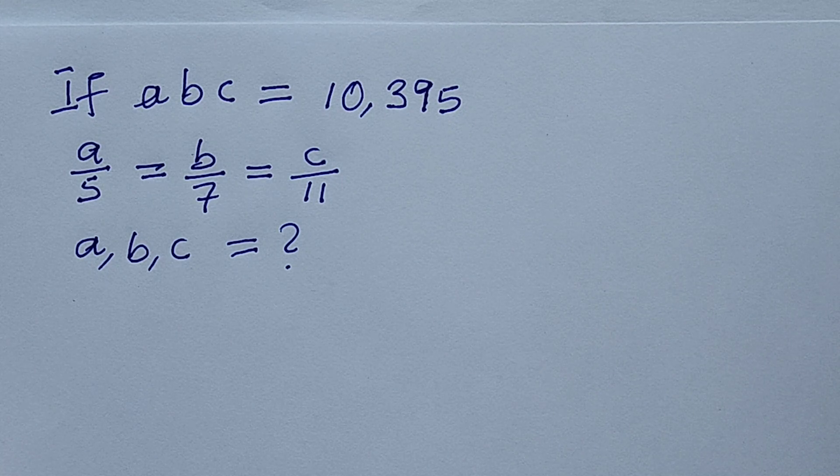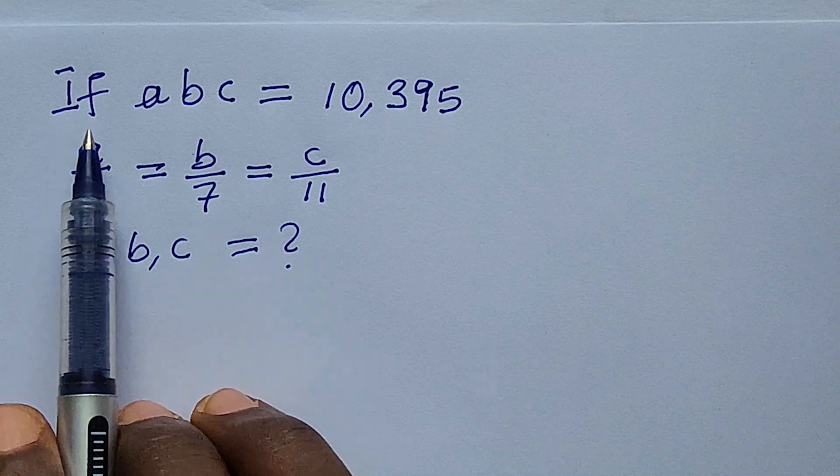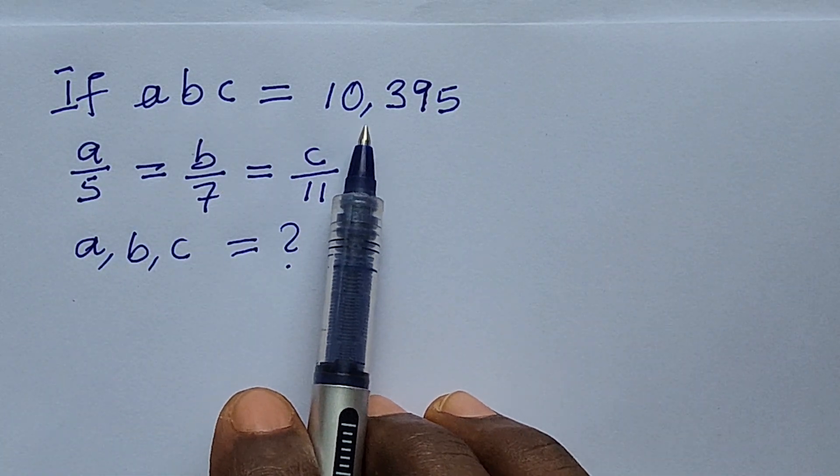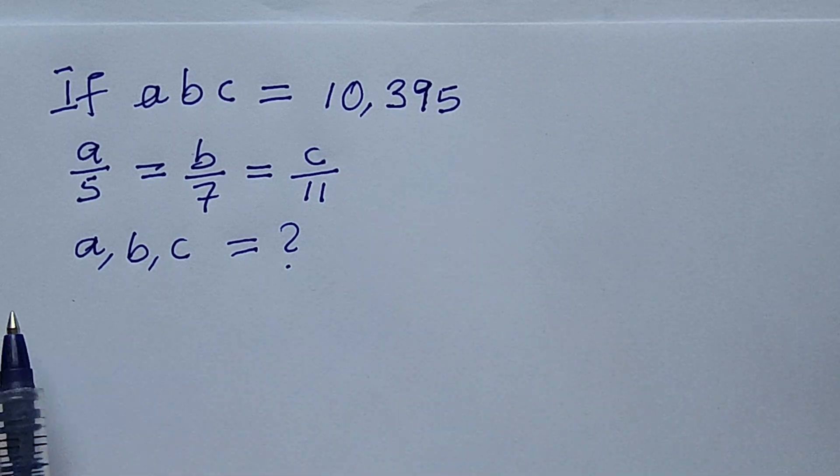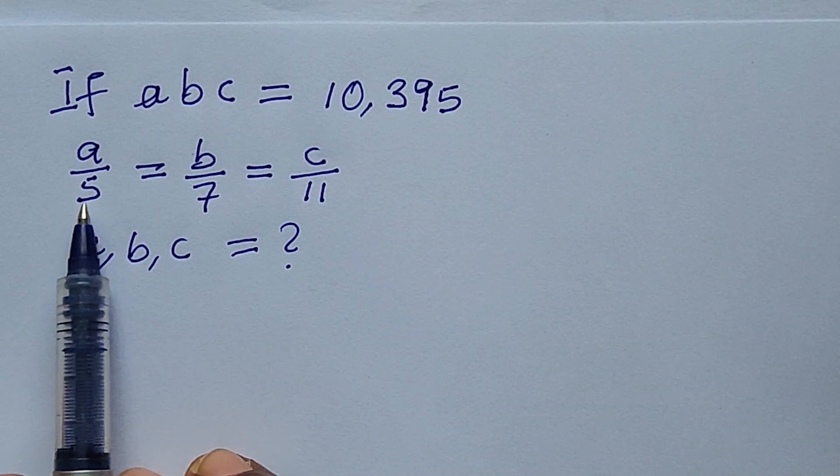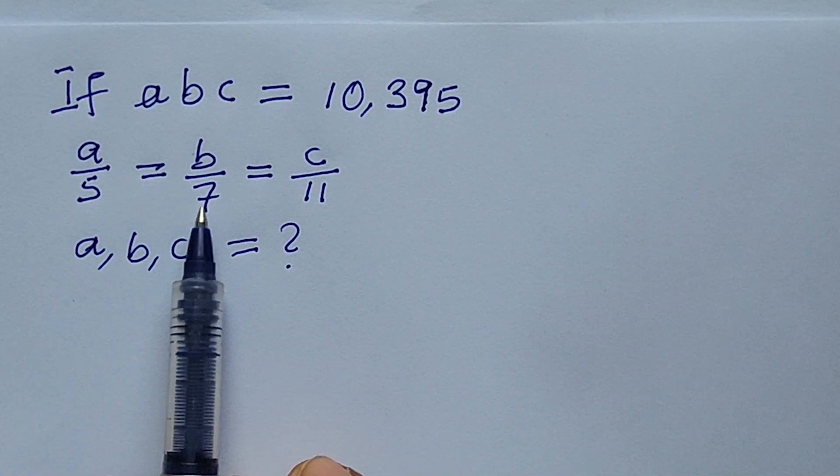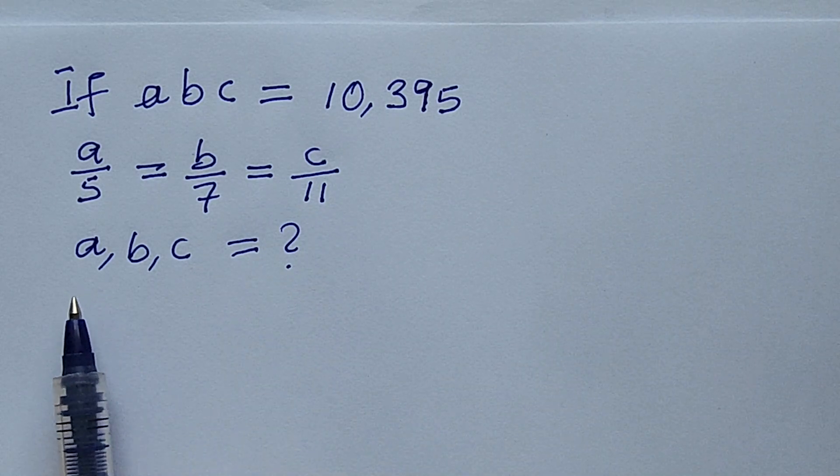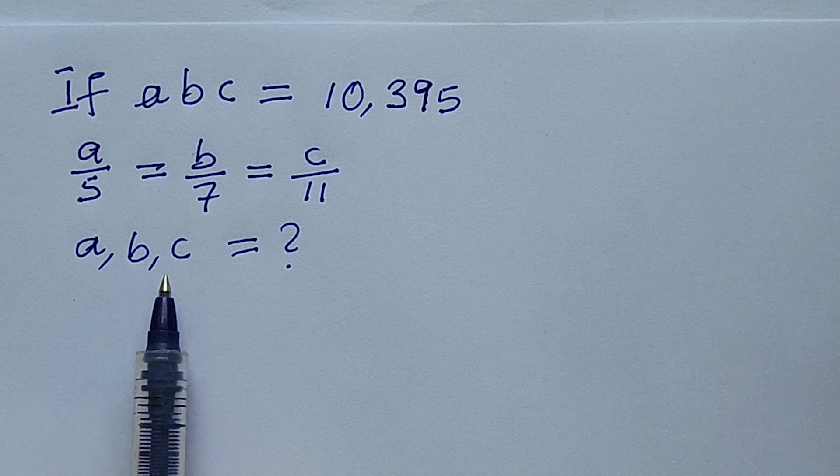Today we have a question before us. The question is: if abc = 10,395 and we are given that a/5 = b/7 = c/11, then what will be the possible values for a, b, c?